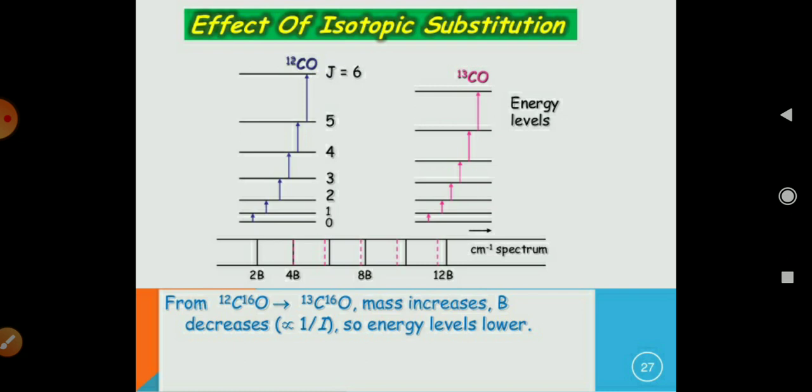So the I, that is B is proportional to 1 by I. So, the energy level lowers. Here you can see that the level of energy of 13CO is less as compared to 12CO. So, for the isotope, the energy level decreases because the mass is increased.